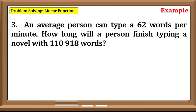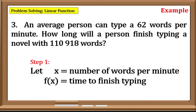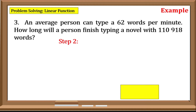Example number 3: An average person can type 62 words per minute. How long will a person finish typing a novel with 110,918 words? Step 1: Identify the dependent and independent variables. Our unknowns are the number of words per minute for the dependent variable and the time to finish typing for our independent variable. Step 2: Generate a function based on the unknowns. Since it needs 62 words per minute, our function would be f(x) = 62x.